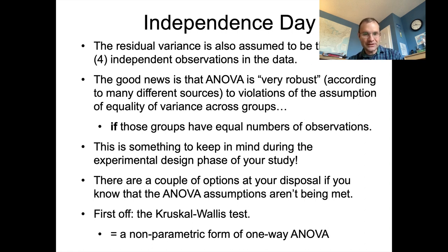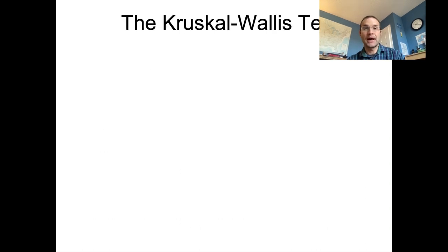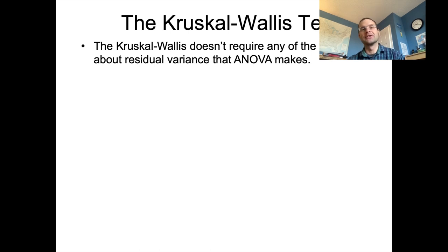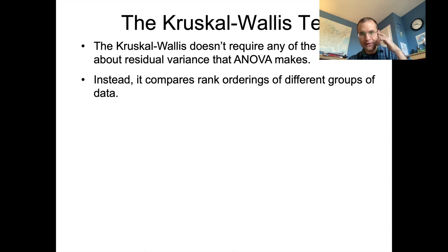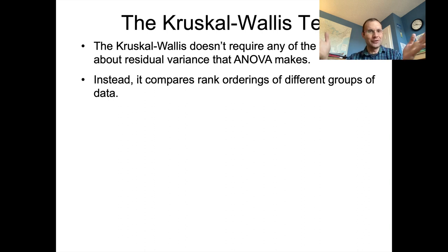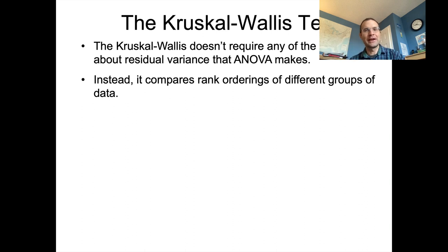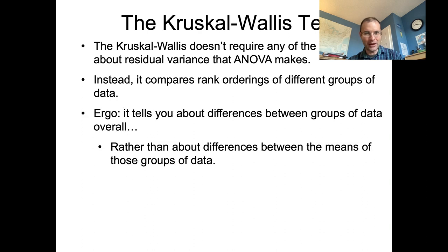The first option is called the Kruskal-Wallis test, which is a non-parametric form of ANOVA. Unfortunately it only applies to one-way ANOVA, so we lose the possibility to look at interactions. But it doesn't require any of the assumptions about residual variance that ANOVA makes. Instead of an F-test comparing variances, it compares rank orderings of different groups of data. These non-parametric tests order the data in rank order and generate their test statistic based on that alone — the specific quantitative differences don't matter much, which is where they lose some power.